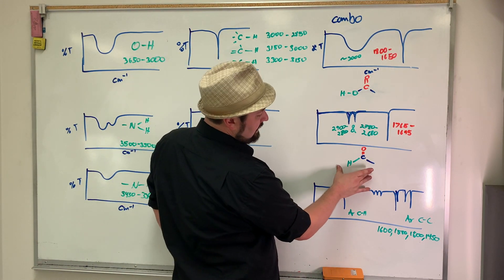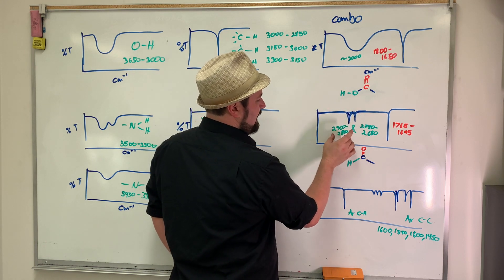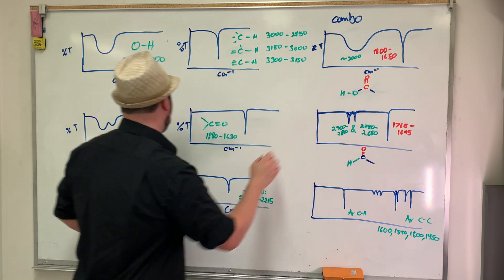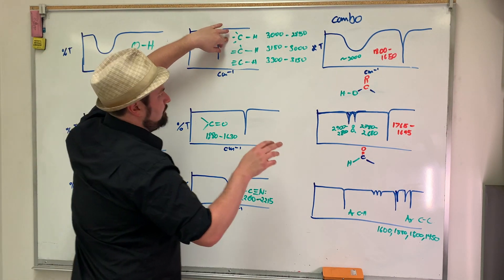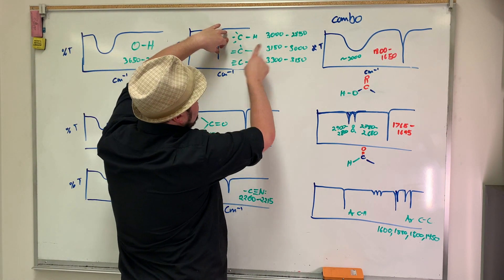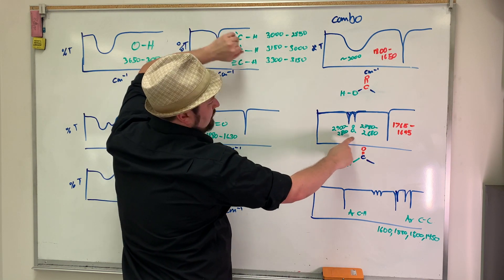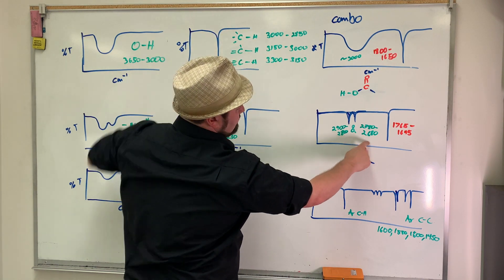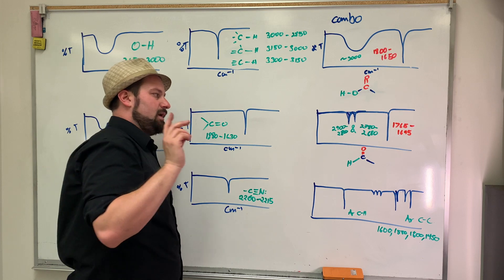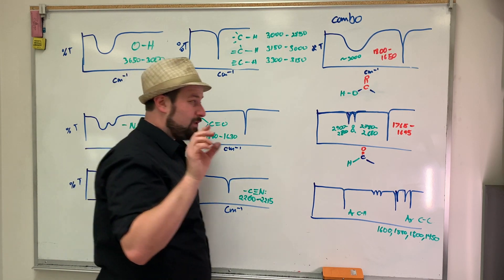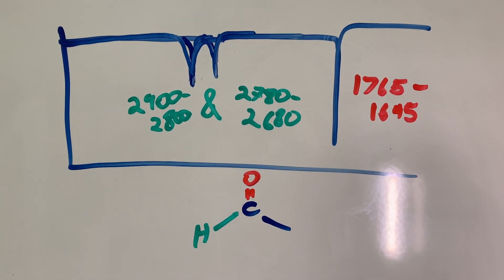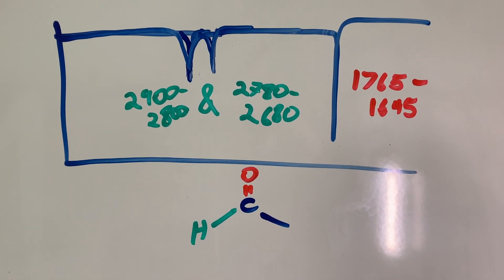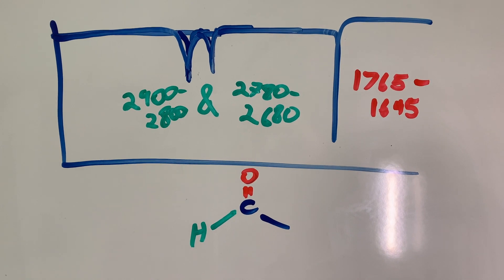Aldehydes, you will see as well, it has a combo. It has kind of three-ish peaks. One which is the normal kind of CH single bond. One that's an additional that's only for aldehydes, from 2780 to 2680. That's usually very weak. These are very small ones. And then you have the normal carbonyl, just a little lower at 1565 to 1645.